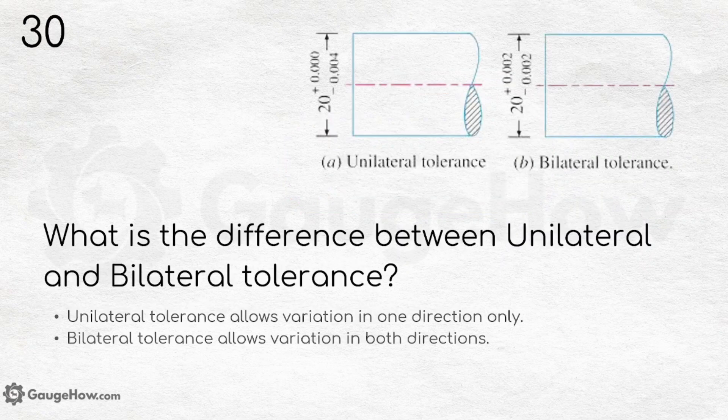What is the difference between bilateral and unilateral tolerances? Unilateral tolerances allow variation in only one direction, while bilateral tolerances allow variation in both directions. In advanced drawings, bilateral tolerances are preferred. You can see from the figure how unilateral and bilateral tolerances differ.